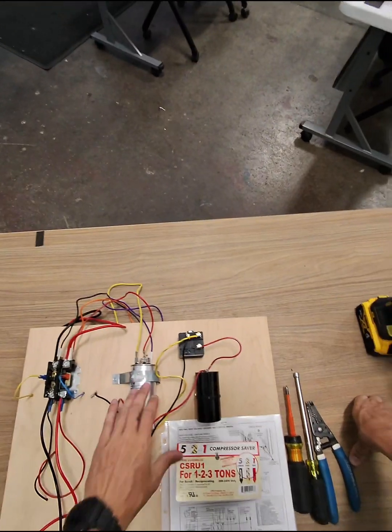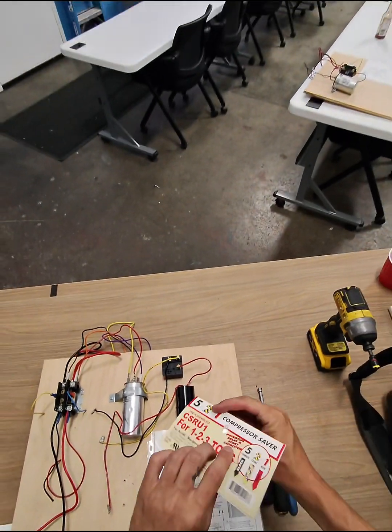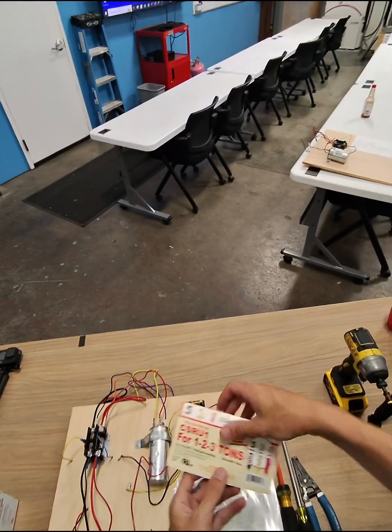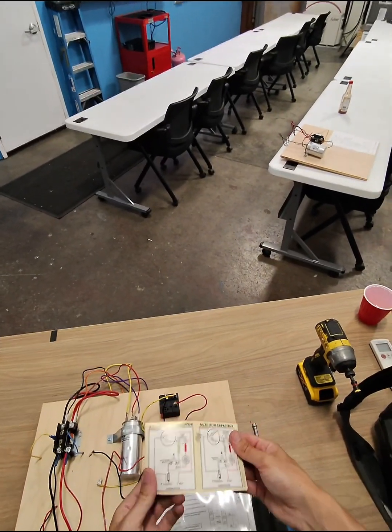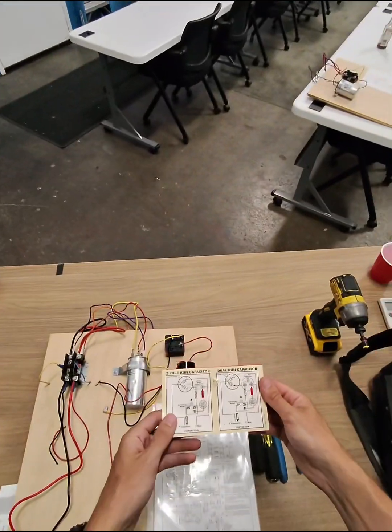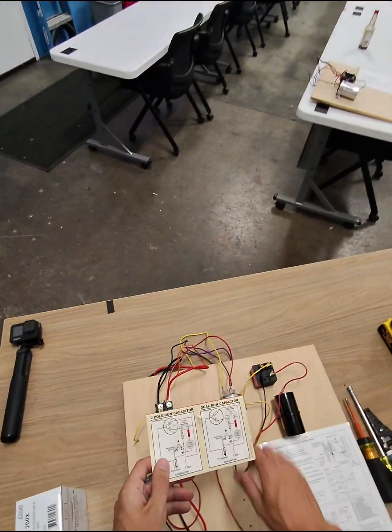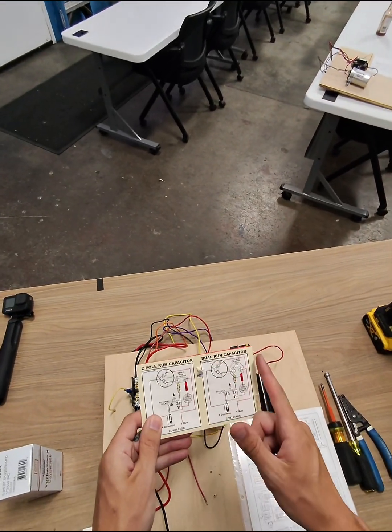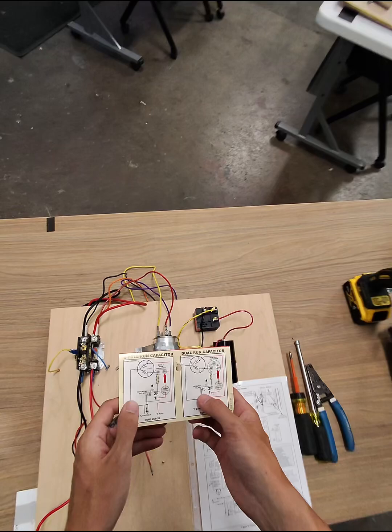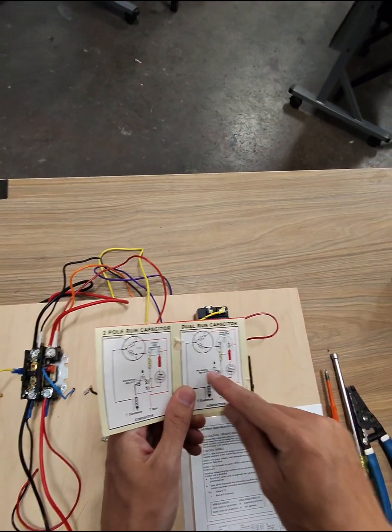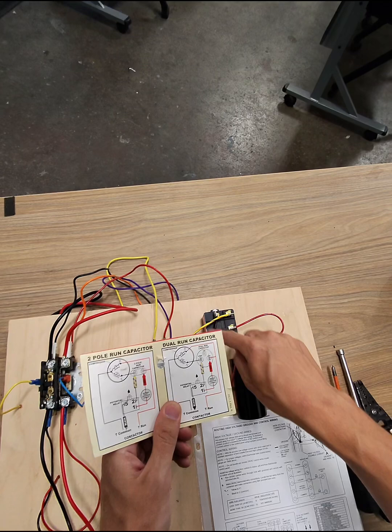So we'll start with this. This is on the packaging, and on the back side are the instructions. Extremely simple. So we have a dual capacitor, so we're going to look at the right-hand side, the dual-run capacitor, and what we want to look at is the relay, 5-2-1, and that's this relay right here.